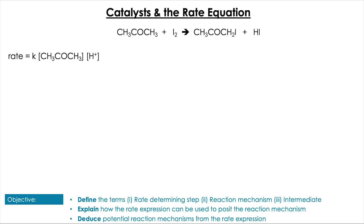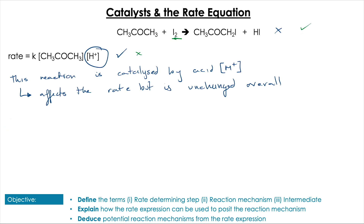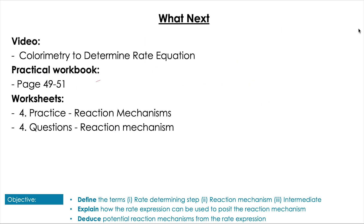The last thing we have to cover is catalysts and the rate equation. Many reactions are catalyzed, meaning their rate is affected by something not in the overall equation. This reaction is catalyzed by acid donated by H+, which is not in the overall equation but does appear in the rate equation — it affects the rate of reaction but doesn't change the overall reaction as it's not used up. This again highlights that we cannot determine the rate equation from the stoichiometric equation alone. We'll be doing a calorimetry experiment to support this, with pages in the practical workbook and worksheets to practice reaction mechanisms.